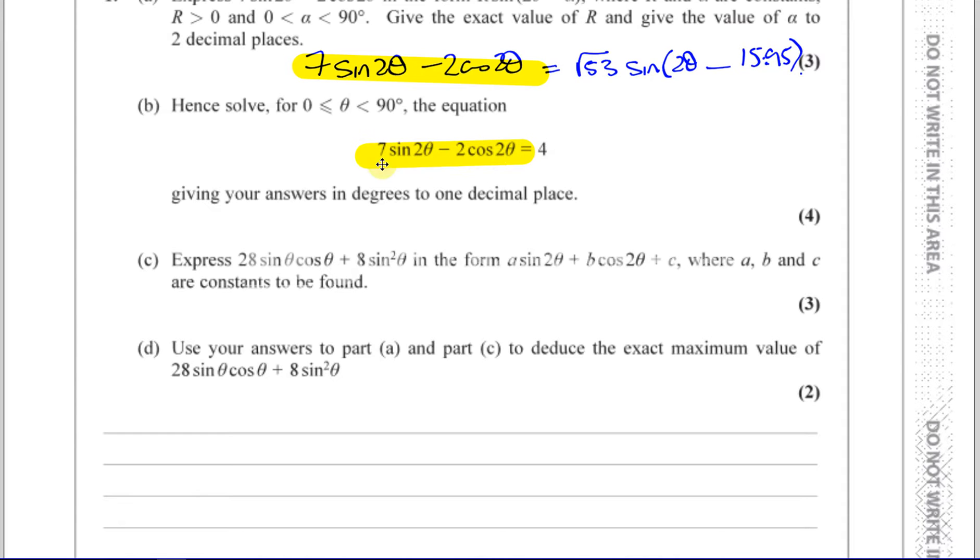You've got 7sin(2θ) minus 2cos(2θ). So what we can do here is express this in terms of what they asked us to change it to, and then that is something we're able to solve as an equation. So we're doing part B now. If we take √53 times sin(2θ - 15.95°), we've got to solve the equation where that is equal to 4.